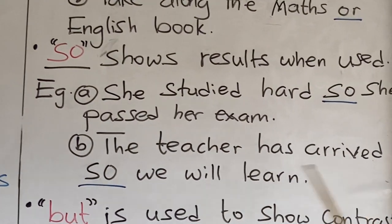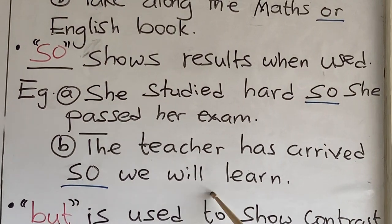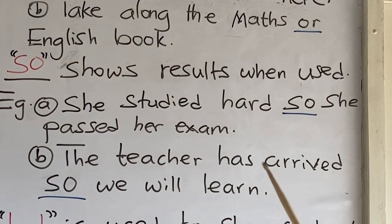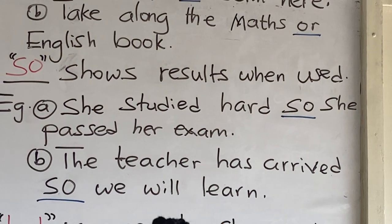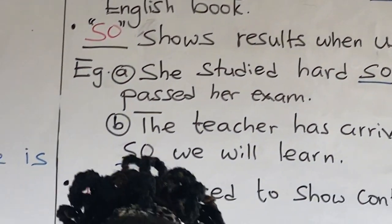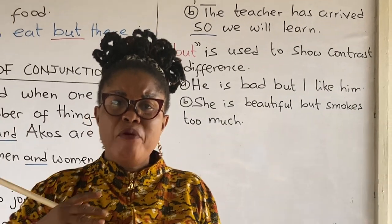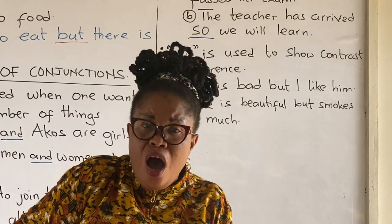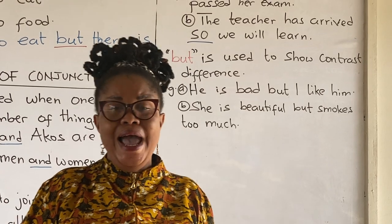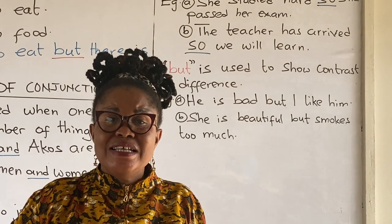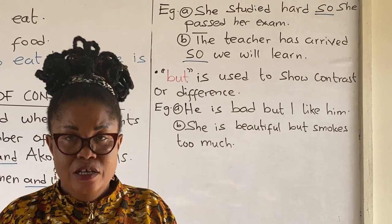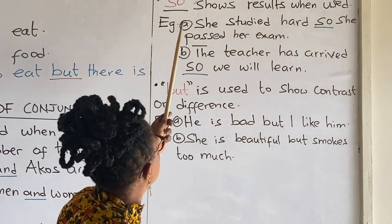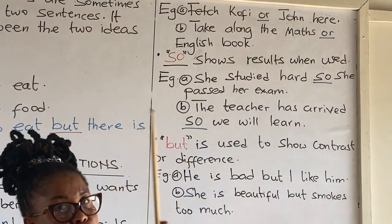Let's look at the next example: The teacher has arrived, so we will learn. The 'so' here is showing a result — the result is that we will learn. So, as soon as you see the conjunction 'so', it shows results.